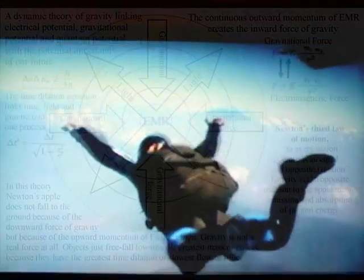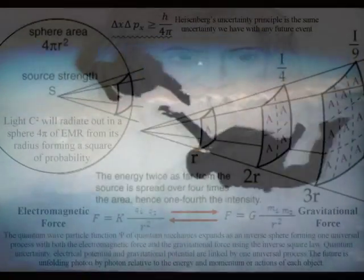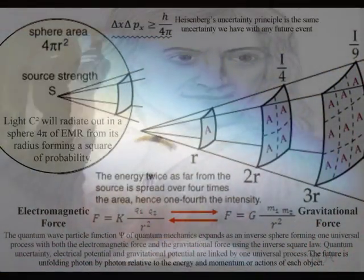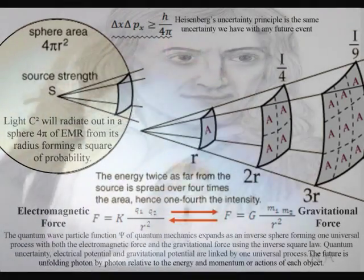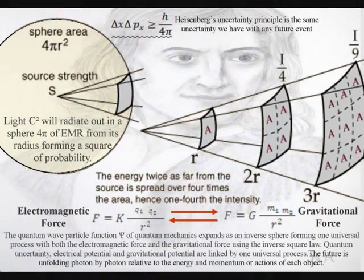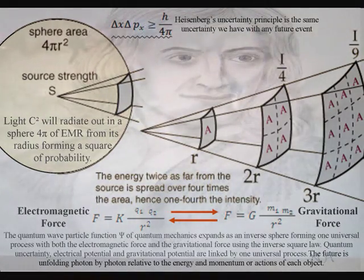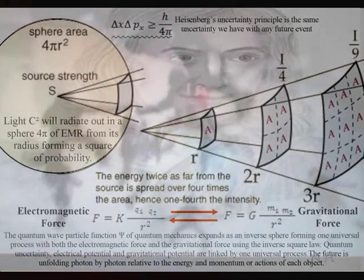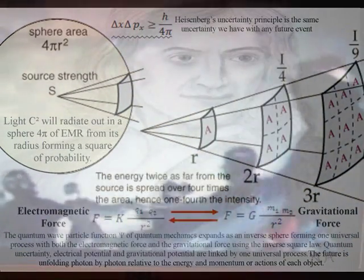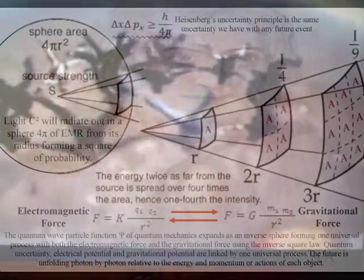This is only logical if gravity is part of this universal process, with the outward momentum of light forming the inward force of gravity. This might sound far-fetched, but it can be seen mathematically, with both the gravitational force and the electromagnetic force sharing the inverse square law, representing the dynamic geometry of this one universal process.